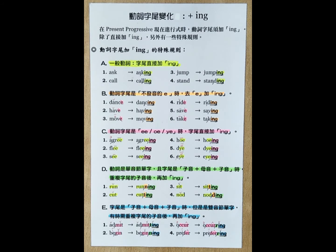C: If the end of the verb is E-E, O-E, or Y-E, we just add an I-N-G.